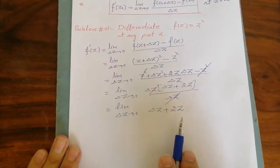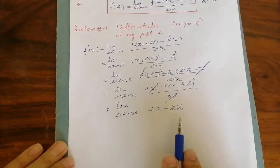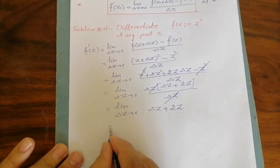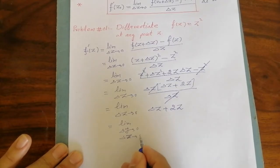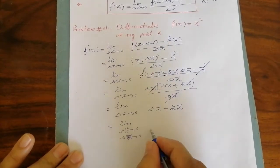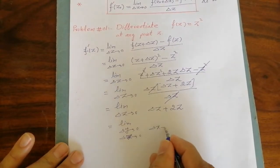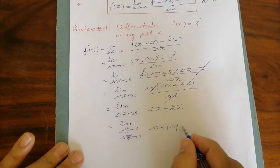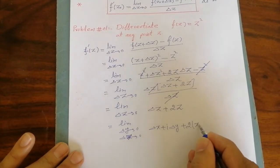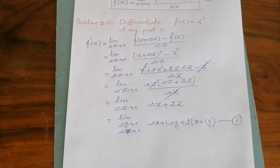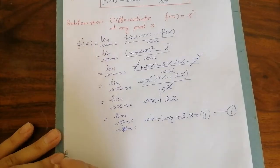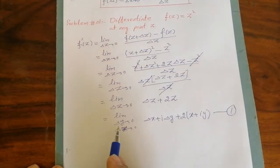For completeness, we can also write this as limit delta y approaches to zero and delta x approaches to zero, where delta z is equal to delta x plus iota delta y. Similarly, z can be written as x plus iota y. Now first of all I have to find these limits along the horizontal axis.